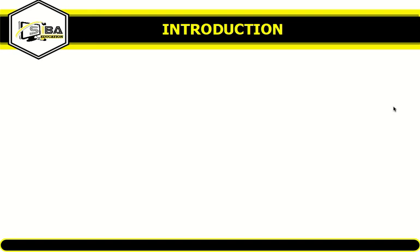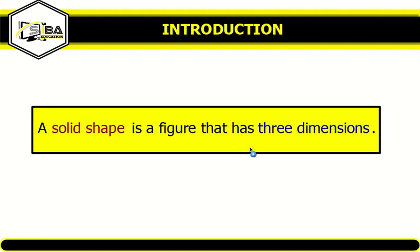I know you may be mentioning objects like the television sets, the radio sets, the fridge, and many others. All these are examples of solid figures. So what is a solid figure? A solid figure or shape is any figure that has three dimensions. Now we are going to look at some special solid shapes.